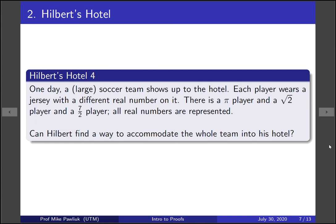Here's one even crazier version. So one day a large soccer team shows up at the hotel. Each soccer player wears a jersey with a different real number on it. So for example, there's a player with a pi jersey, there's a player with a root 2 jersey, and there's a player with a 7 over 2 jersey, and all real numbers are represented. This is a huge soccer team. Can Hilbert find a way to accommodate this whole team into his hotel?